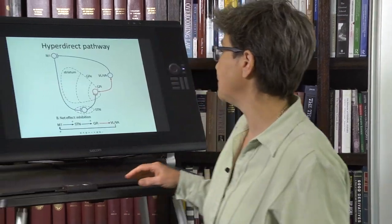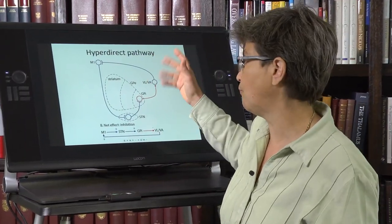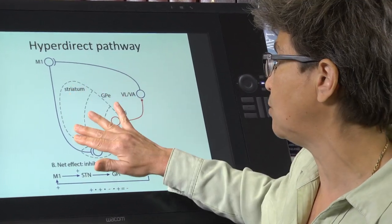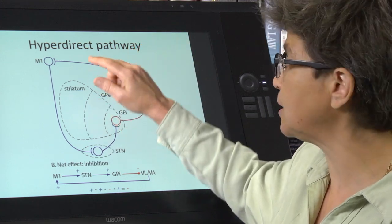The point of the hyperdirect pathway is an all-stop. So let's just take a look at that. What I told you before was that the input to the basal ganglia came in through the striatum. This is an exception to that.